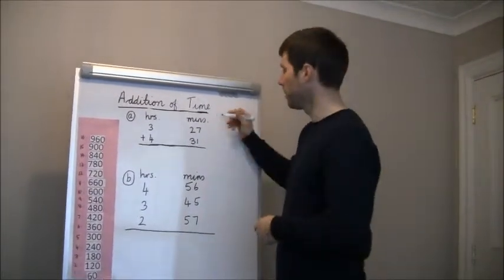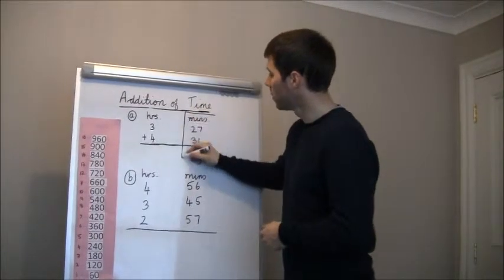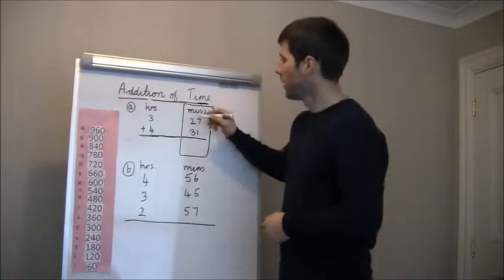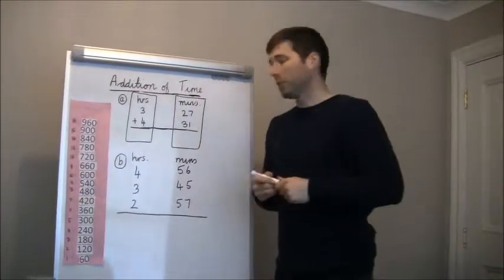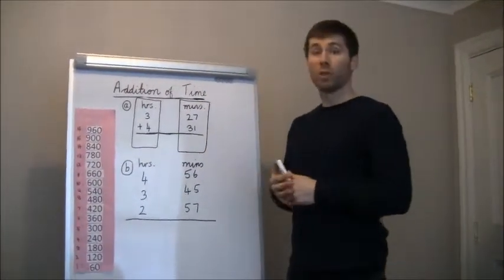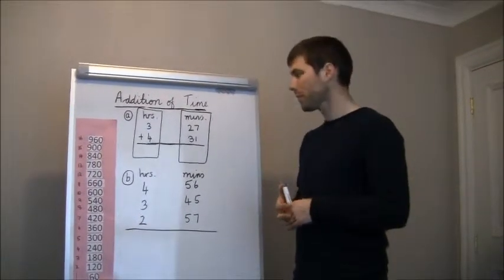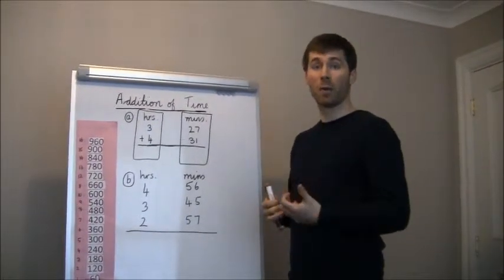Now when we're dealing with addition of time, we treat our minutes as one whole separate sum and then we treat our hours as one whole separate sum. Now sometimes when you add up your minutes, your total will be too big. Then we're going to have to convert into hours and minutes.